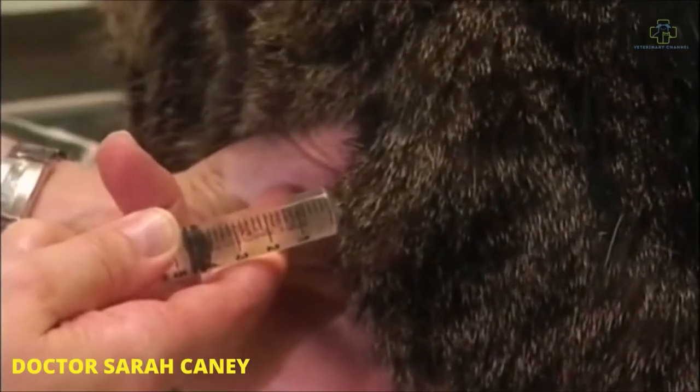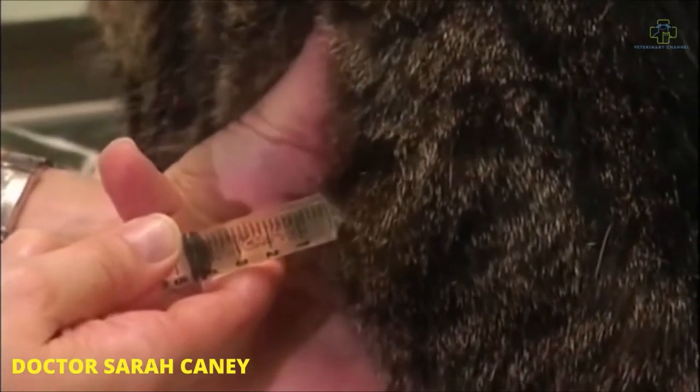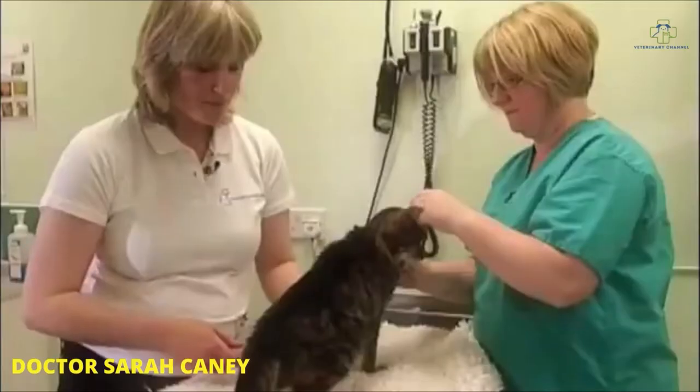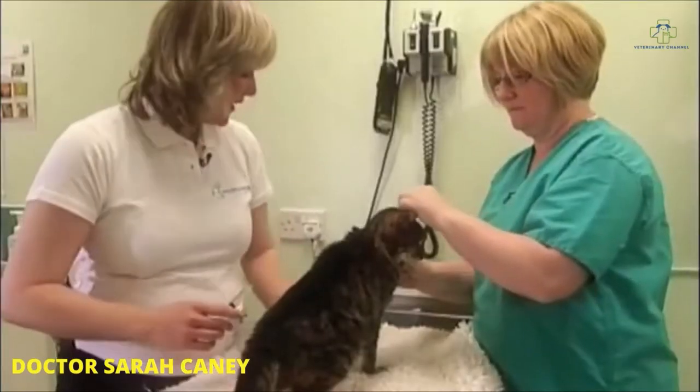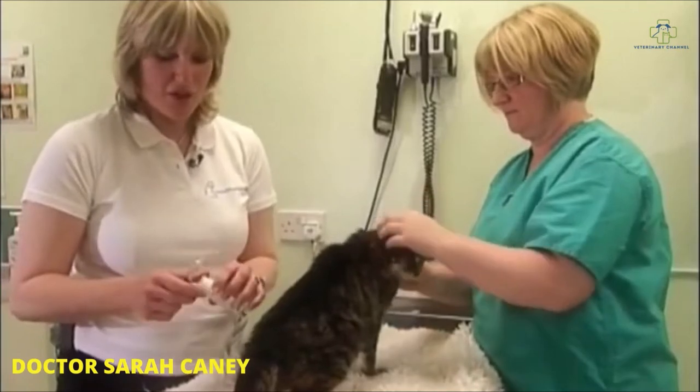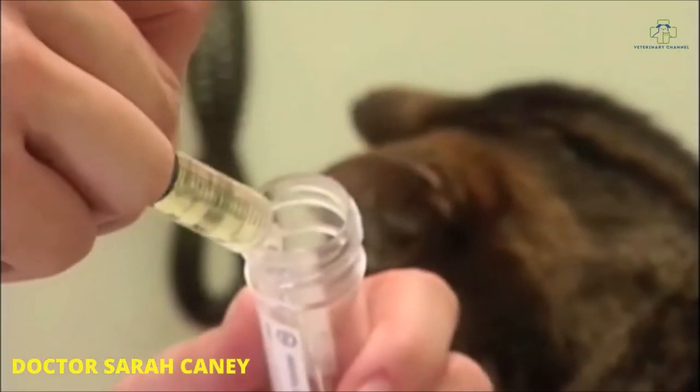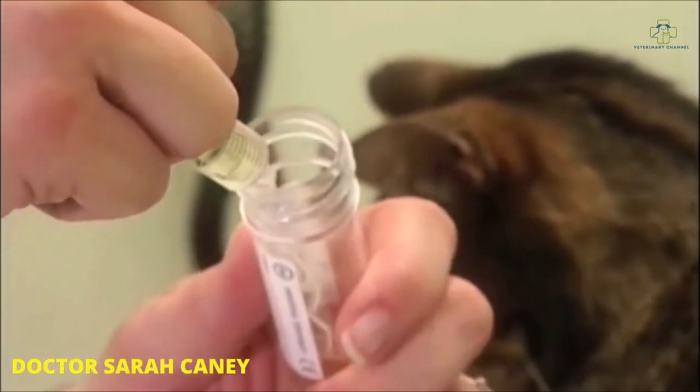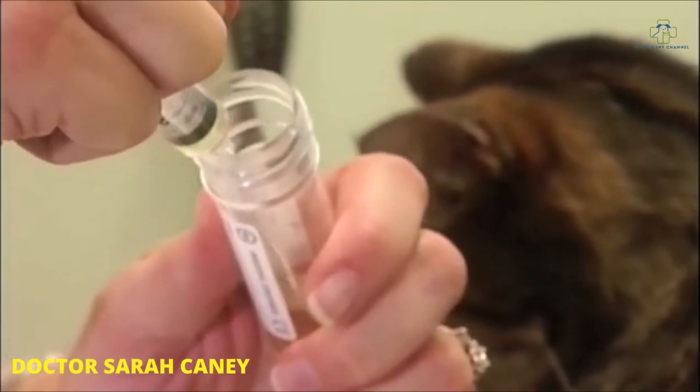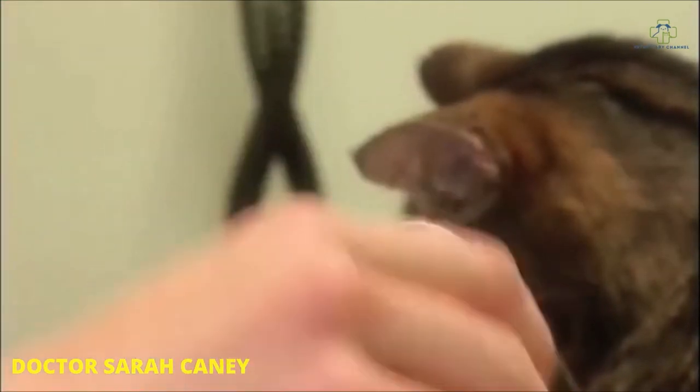Once I've collected my sample, I then release my hold on the bladder and withdraw the needle. My sample is then ready to place in a collection tube. Five mils of urine is generally adequate to do all of the tests that we need.